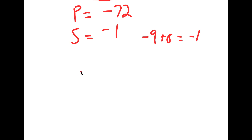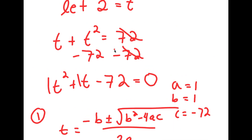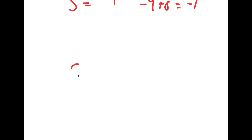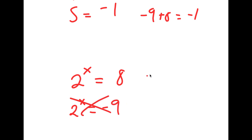Now that I know 8 and negative 9 work, I can go back and substitute, since 2 to the power of x equals t. That means 2 to the power of x equals 8, or 2 to the power of x equals negative 9. Since 2 to the power of x equals negative 9 has no solution, only the first equation works, giving x equals 3.